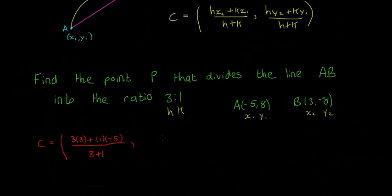And now the next one is going to be H by Y2, so that's going to be 3 by Y2, which is minus 8, and that's going to be plus 1, which is K, multiplied by Y1, and Y1 is 8. And again, that's all divided by 3 plus 1.